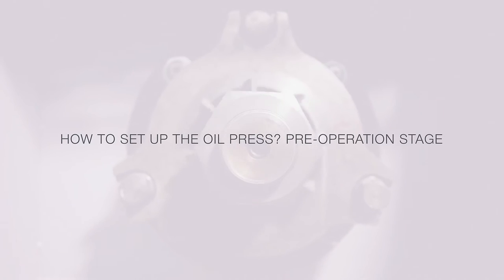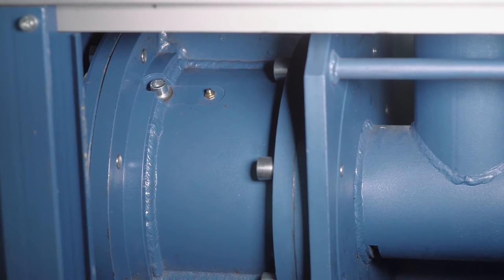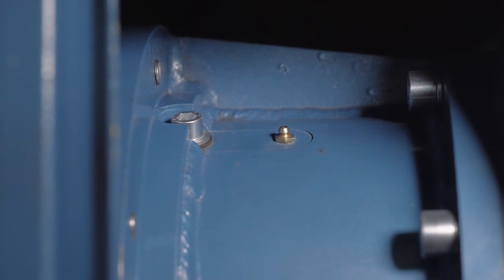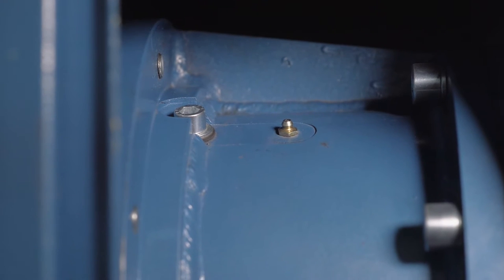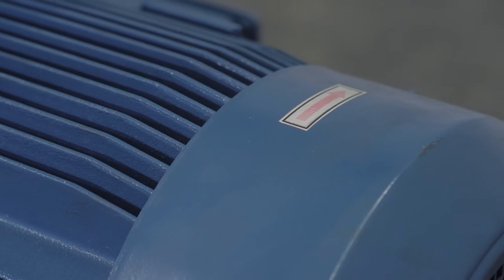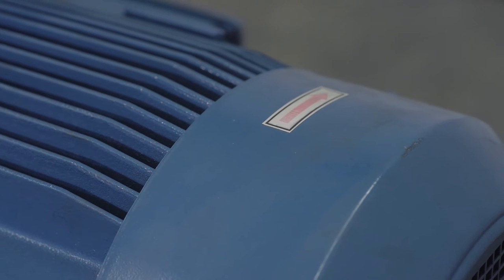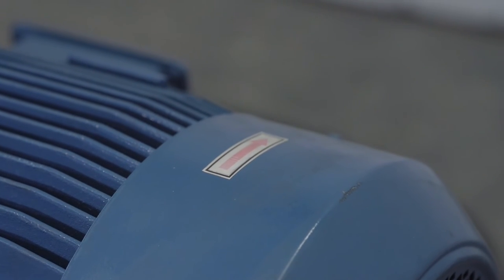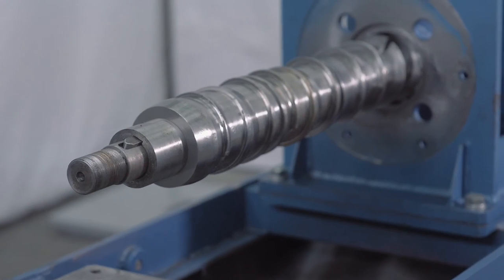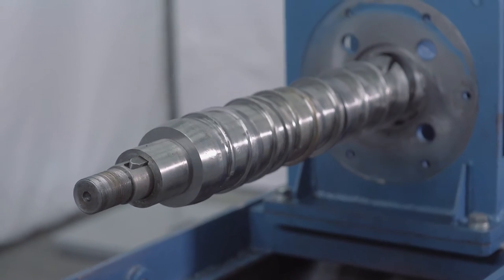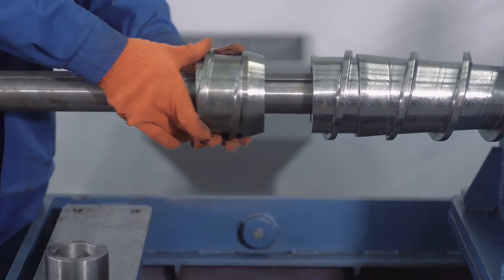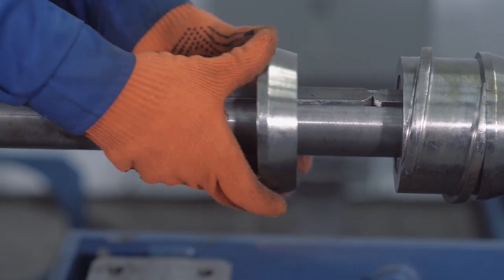How to set up the oil press? Pre-operation stage. First check grease availability in the bearing assembly. If there's no grease add it. Now check the screw shaft rotation. The right shaft rotation is clockwise in accordance with the arrow on the motor surface. The number of screws and bushings depends on the raw material being pressed. In this particular case we have a configuration for rapeseed processing. Here we've assembled the screw shaft according to raw material type.